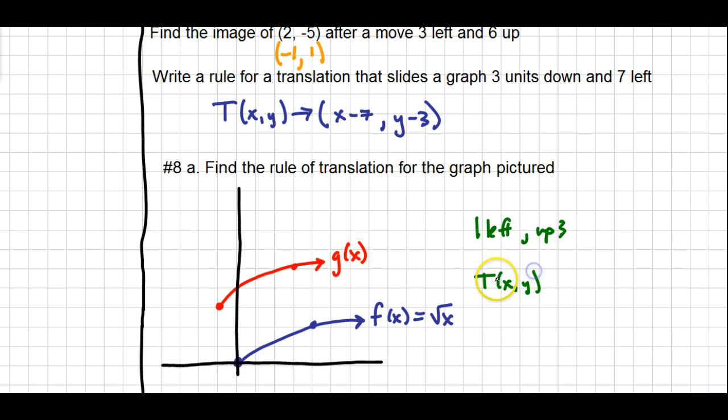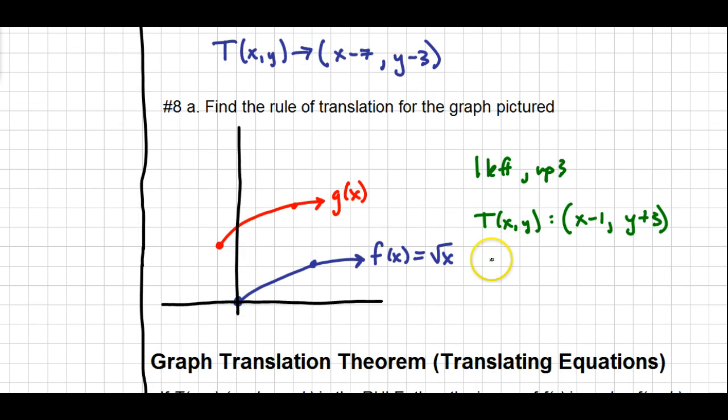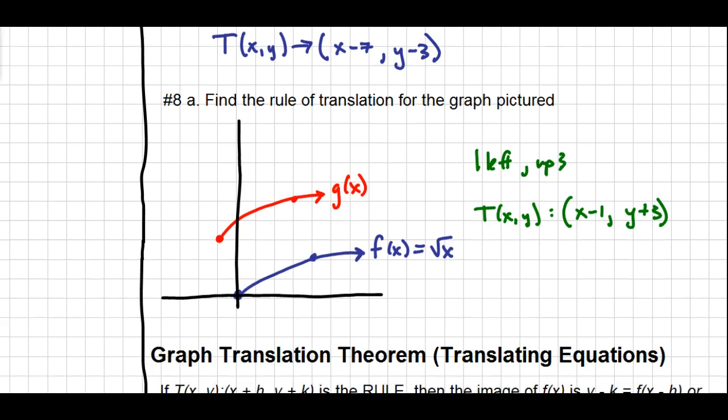So now I need to write a rule that matches with that information. So again, I've got capital T for translation. Left one is X minus one. Up three is Y plus three. So there's my rule that gets me from blue to red, or from f to g. We will revisit this question one more time, so leave some space there if you are taking notes.